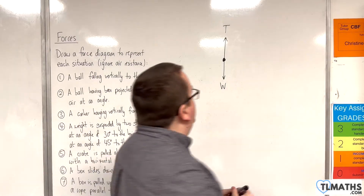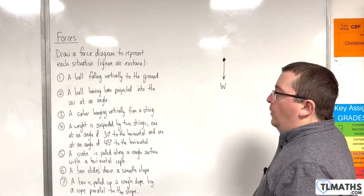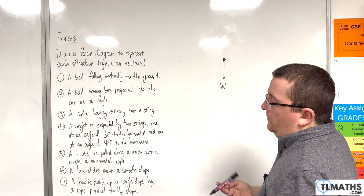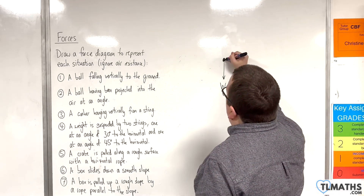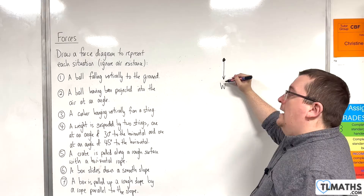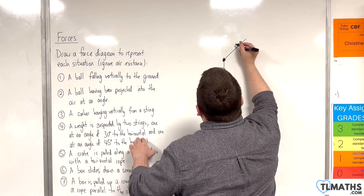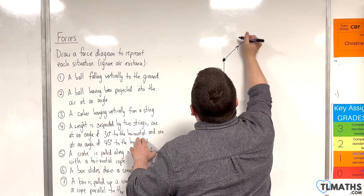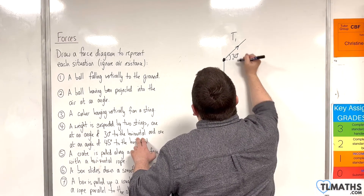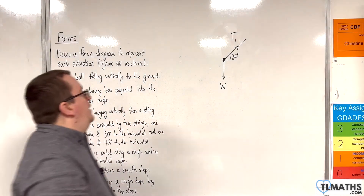Number four: a weight is suspended by two strings — one at an angle of 30 degrees to the horizontal, and one at an angle of 45 degrees to the horizontal. Here is my weight, with its weight acting vertically downwards. One string acts at 30 degrees to the horizontal, and there will be tension in that string — we'll call that T1 — acting at an angle of 30 degrees to the horizontal.